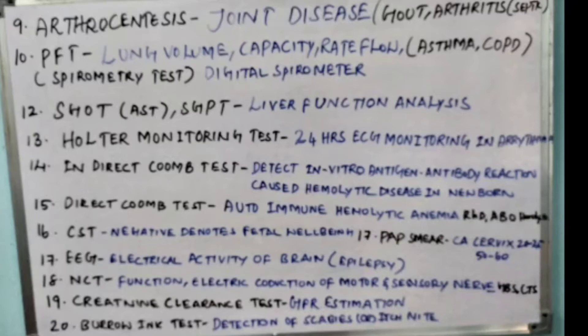Seventeenth point: Pap smear, done to find out cervical cancer. It is done for ladies aged 20 to 25 years up to 50 to 60 years of age group.